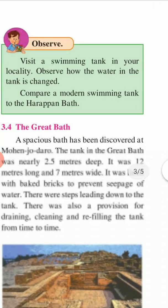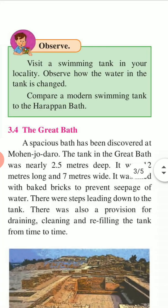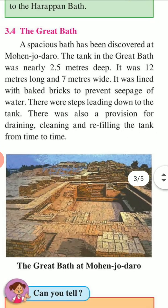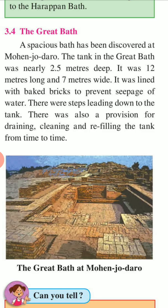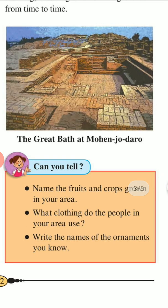Observe this: visit a swimming tank in your locality and observe how the water in the tank is changed. Compare a modern swimming tank to the Harappan Great Bath. A spacious bath has been discovered at Mohenjo-daro. The tank in the Great Bath was nearly 2.5 meters deep, 12 meters long, and 7 meters wide. It was lined with baked bricks to prevent seepage of water. There were steps leading down to the tank, and a provision for drainage, cleaning, and refilling the tank from time to time. This is the Great Bath at Mohenjo-daro.